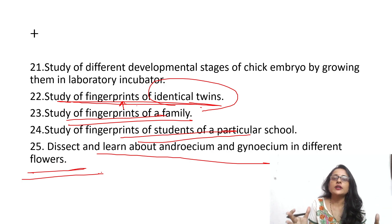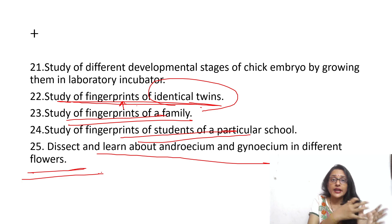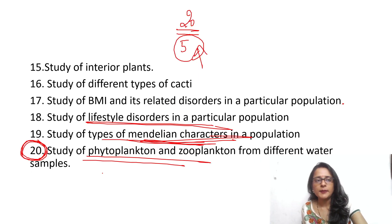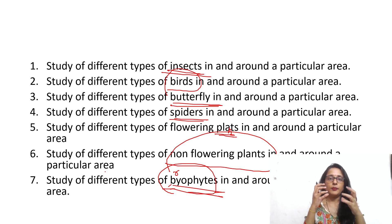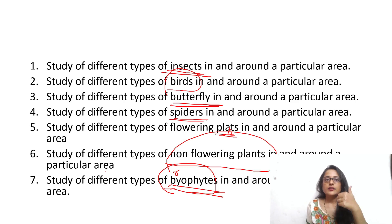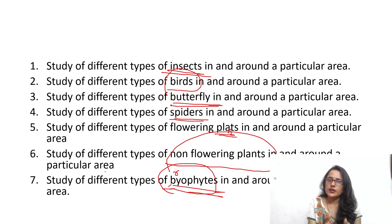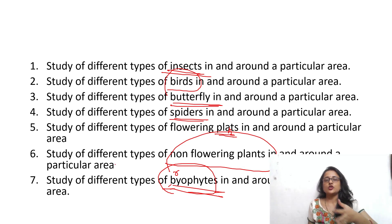Dissect and learn about the androecium and gynoecium of different flowers. Collect 25 to 30 flowers, dissect the androecium and gynoecium, photograph them, and study the variety of structures across different flower species. These projects do not require much laboratory setup, and your written project should include structured headings: introduction, theory, study site, sample collection, materials and methods, results, and conclusion. A well-structured undergraduate project following these guidelines will be a good one.